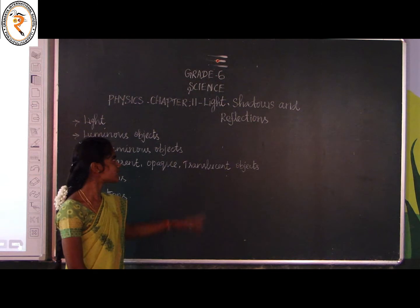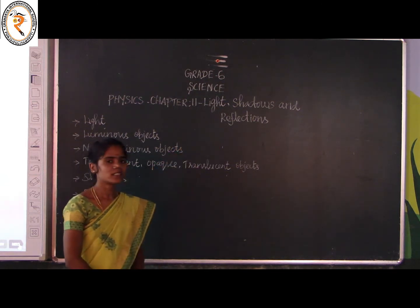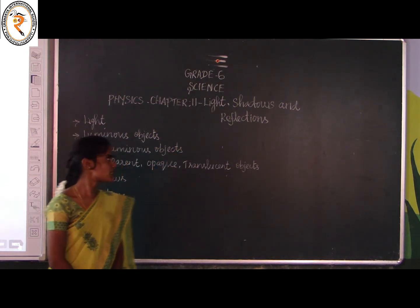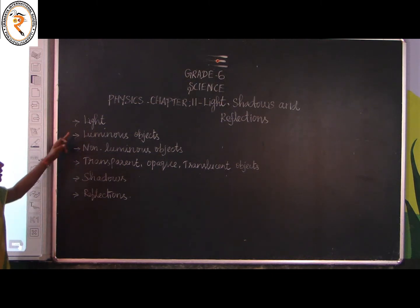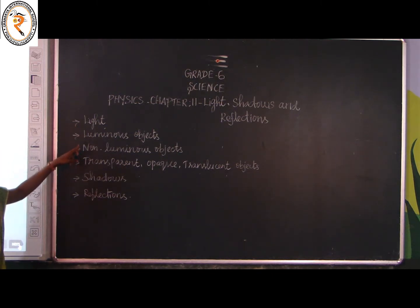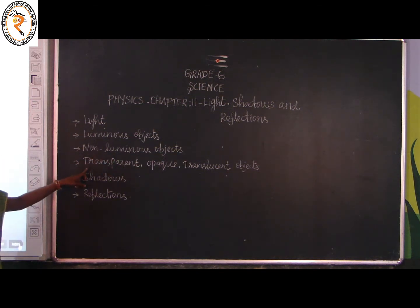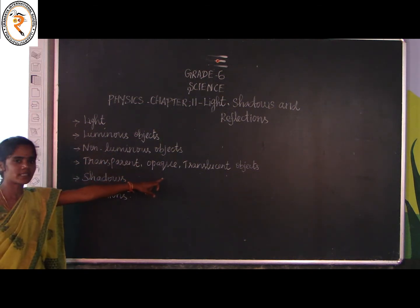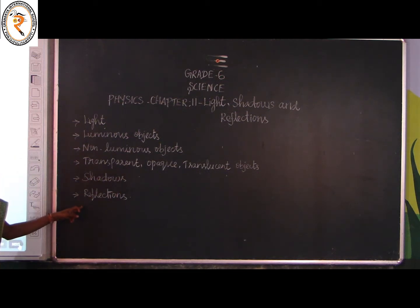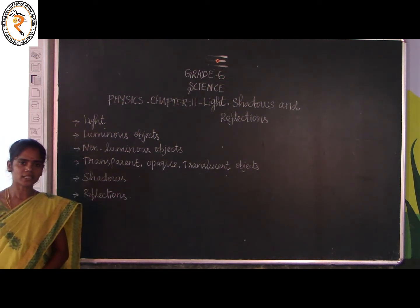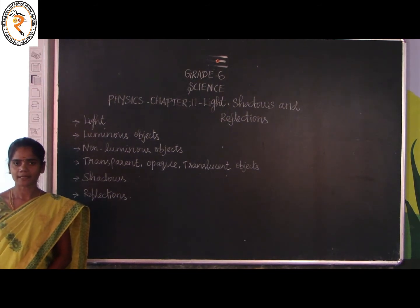What is the name of the chapter? It is Light, Shadows and Reflections. In this chapter these topics we will discuss: What is Light? What are called luminous and non-luminous objects? Transparent, opaque, and translucent objects, shadows and reflections. Let us see these topics in detail, children.